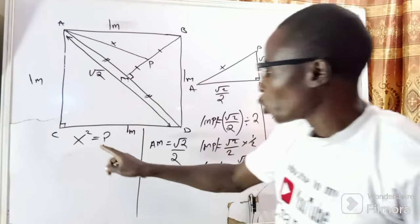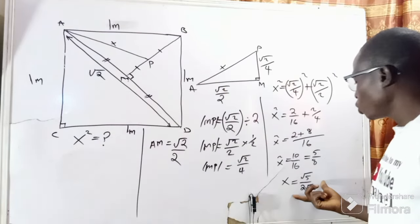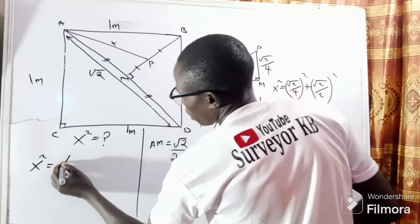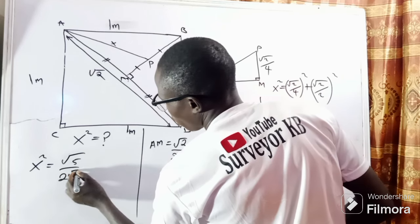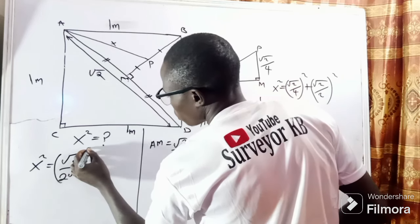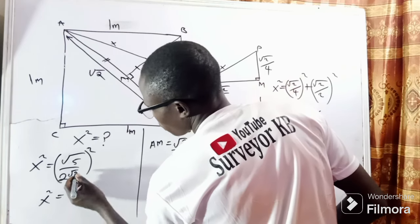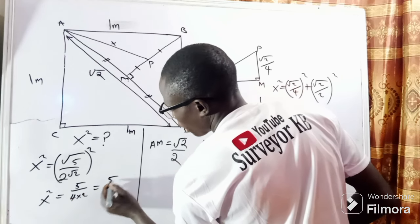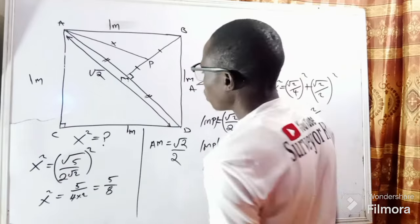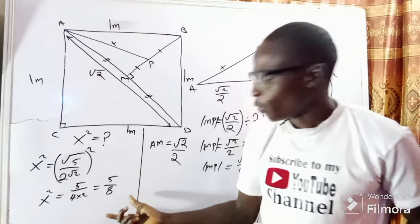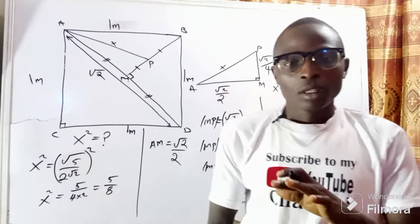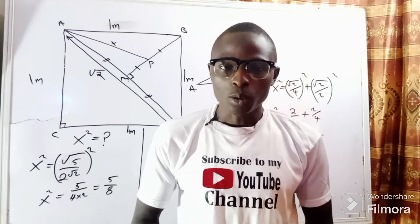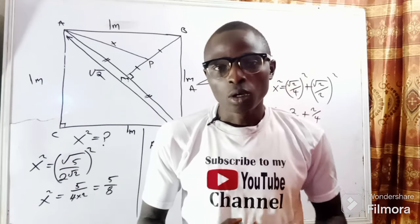But our mandate is to find x squared, not x, so I need to square my answer. X squared equals the square root of five divided by two root two, whole squared. That means x squared equals five divided by four times two, which is five divided by eight. So the answer is x squared equals five over eight. That is all I have for you today — if you learned something new, don't hesitate to subscribe. Bye!